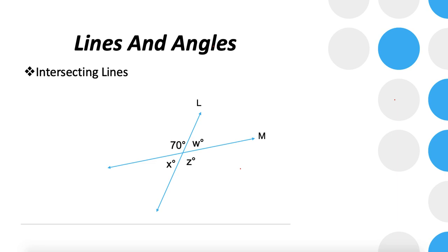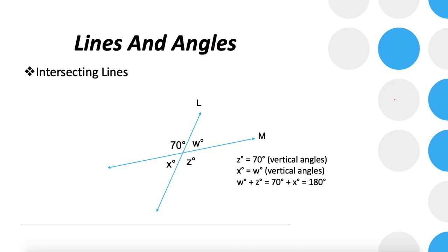For a quick example: given four angles 70, W, Z, and X at an intersection — since 70 and Z are vertical angles, Z equals 70. Since W and X are supplementary to 70, we get X equals 180 minus 70 which is 110. And since X and W are vertical angles, W also equals 110. So we can find all three remaining angles from just one given angle.